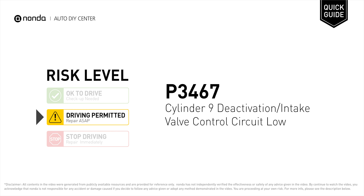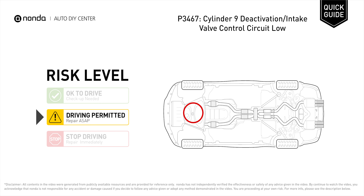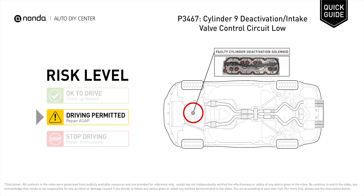P-3467 is a diagnostic trouble code for Cylinder 9 deactivation or intake valve control circuit low. Under this circumstance, short distance driving is permitted, but your vehicle should be repaired ASAP. It indicates that the ECM has detected voltage or resistance inside the Cylinder 9 deactivation or intake valve control circuit that is excessively low.